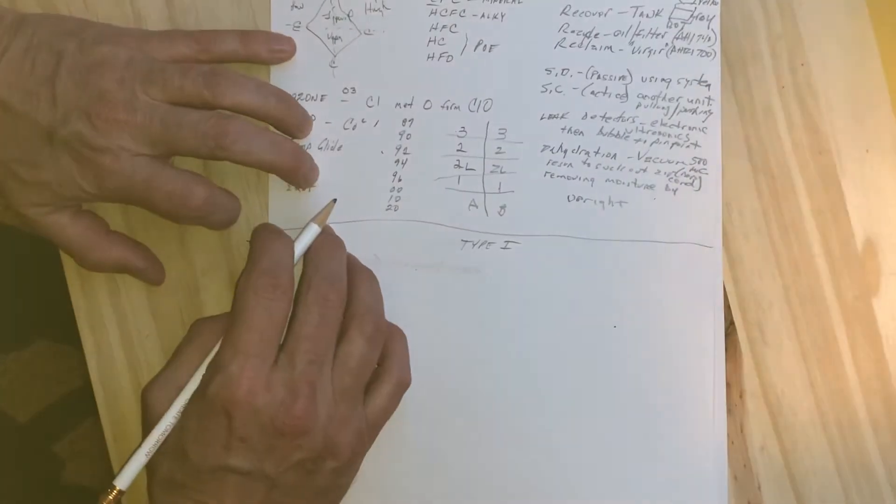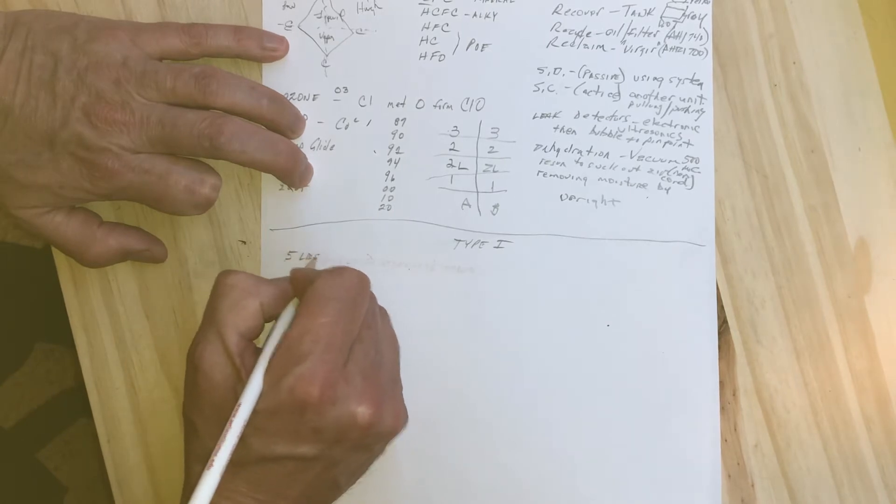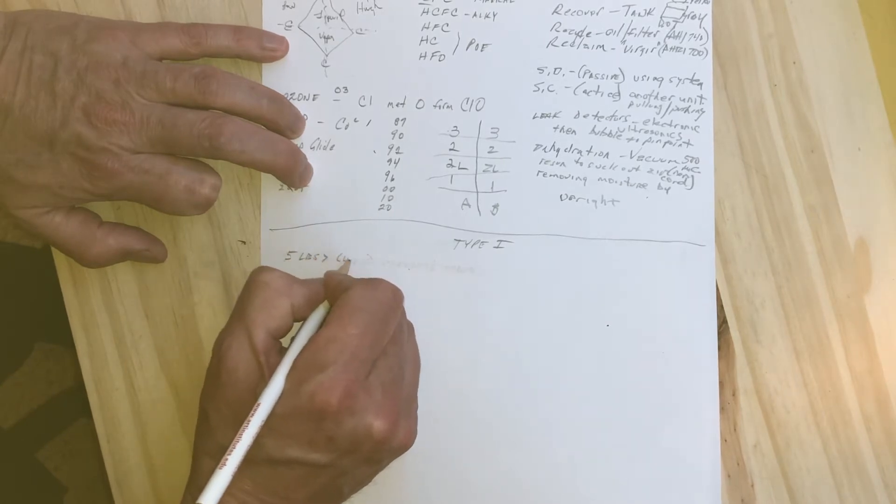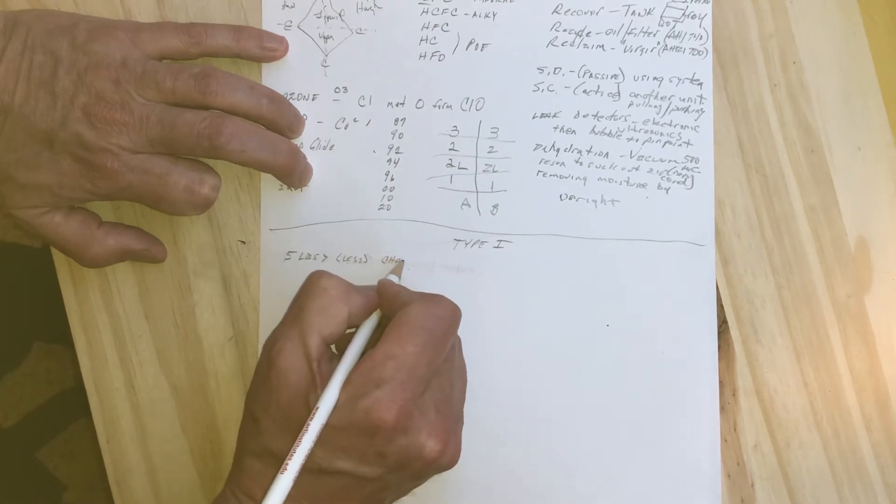Let's talk about the top 20 things you need to know about Type 1 appliances. The first one is that they deal with 5 pounds or less of refrigerant that's been charged at the factory.